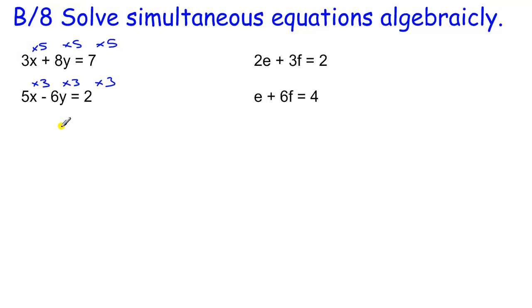When I do that I end up with 15x plus 40y equals 35 from the first equation, and in the second equation I end up with 15x minus 18y equals 6.